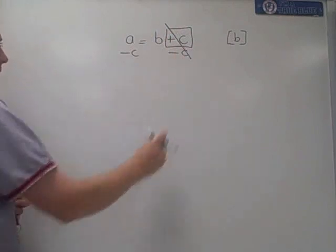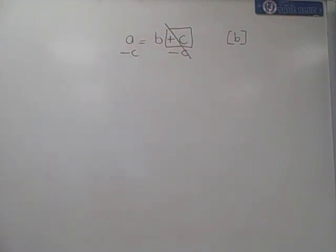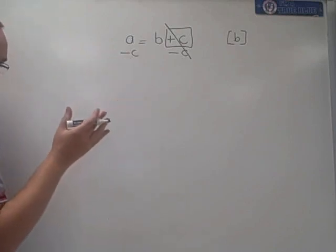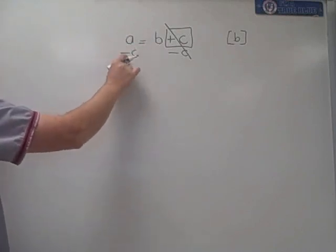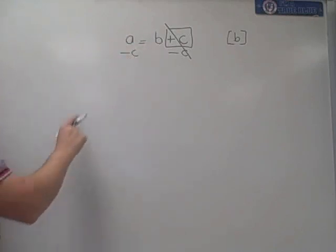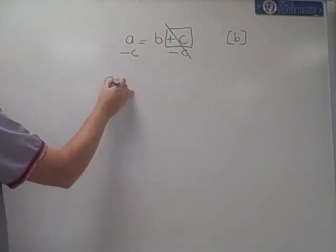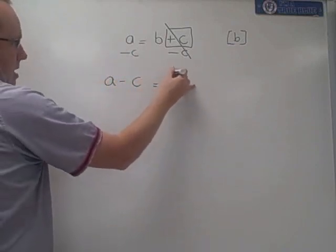Now, this has the effect of cancelling out here. That's why I do it, because C take away C is 0. And on this side, and this is what makes these questions slightly different, is A take away C. I can't actually work that out, because these aren't like terms. All I can say is that it is A minus C.